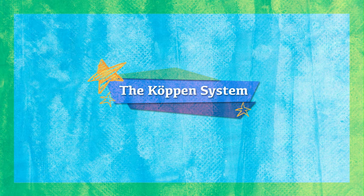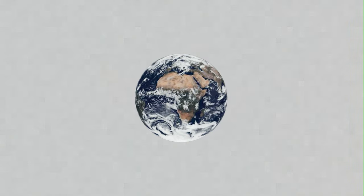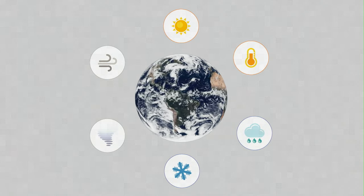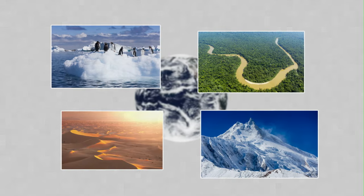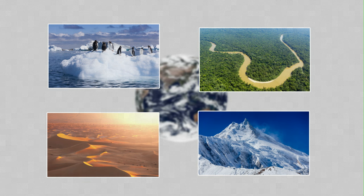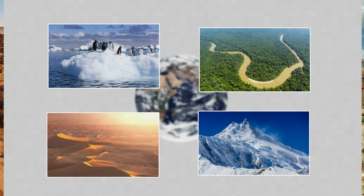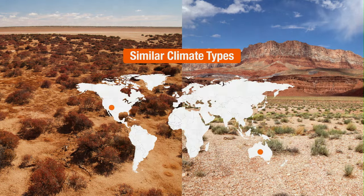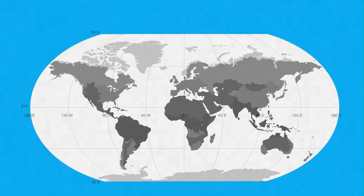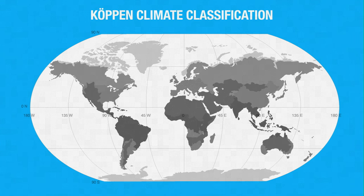The Köppen System. The climate differs depending on where you are and when you are there. Since no two places are exactly alike, no two places share the same exact climate. However, areas that are thousands of kilometers apart and have unique ecosystems may have similar climate types. One well-known system that categorizes global climate types is called the Köppen Climate Classification System.